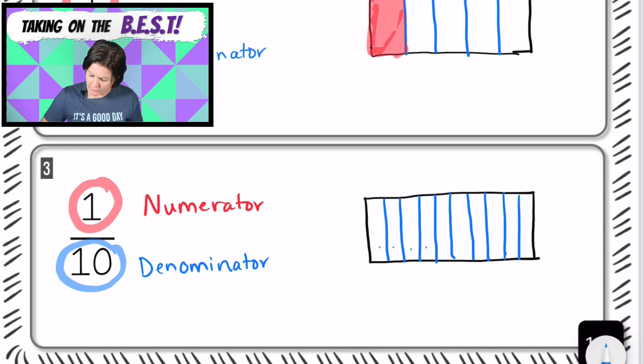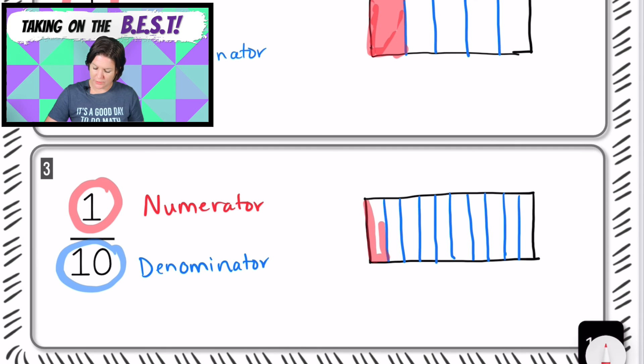So just double-checking. One, two, three, four, five, six, seven, eight, nine, ten. Ten equal parts. We are good to go there. And the numerator is one, so we need to shade in one part. So let's go ahead and shade in one part for the numerator. And this represents one-tenth. It's one-tenth of the whole thing. Go ahead and make sure that you have that copied, and then let's close out this video lesson.